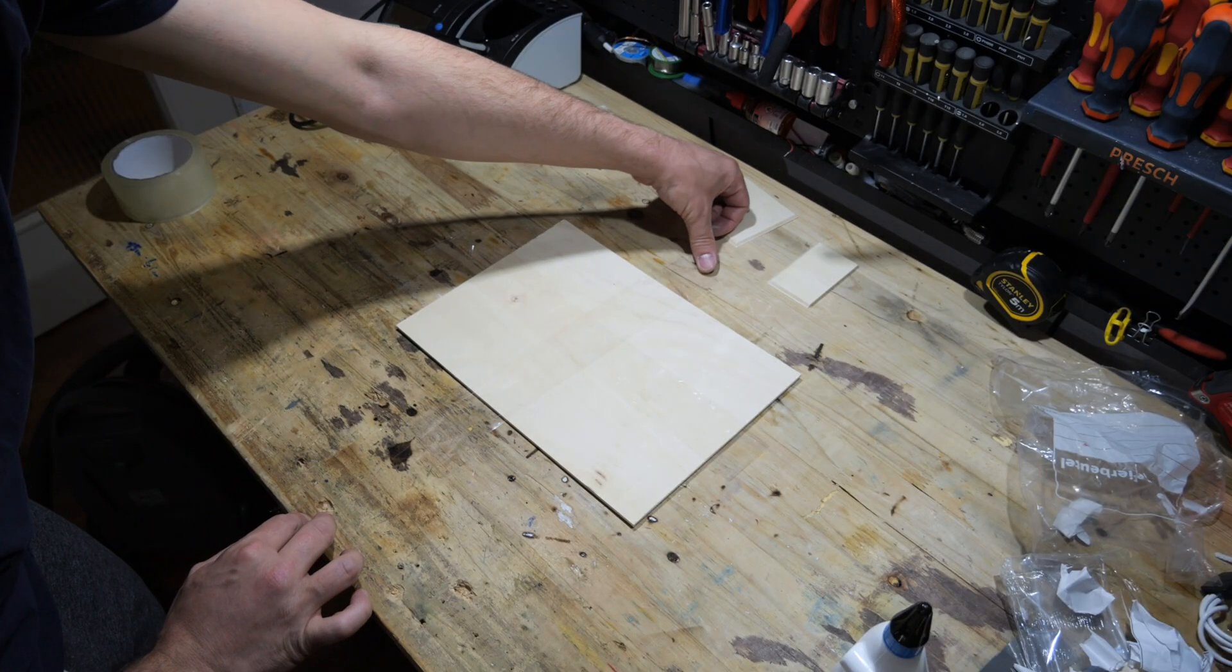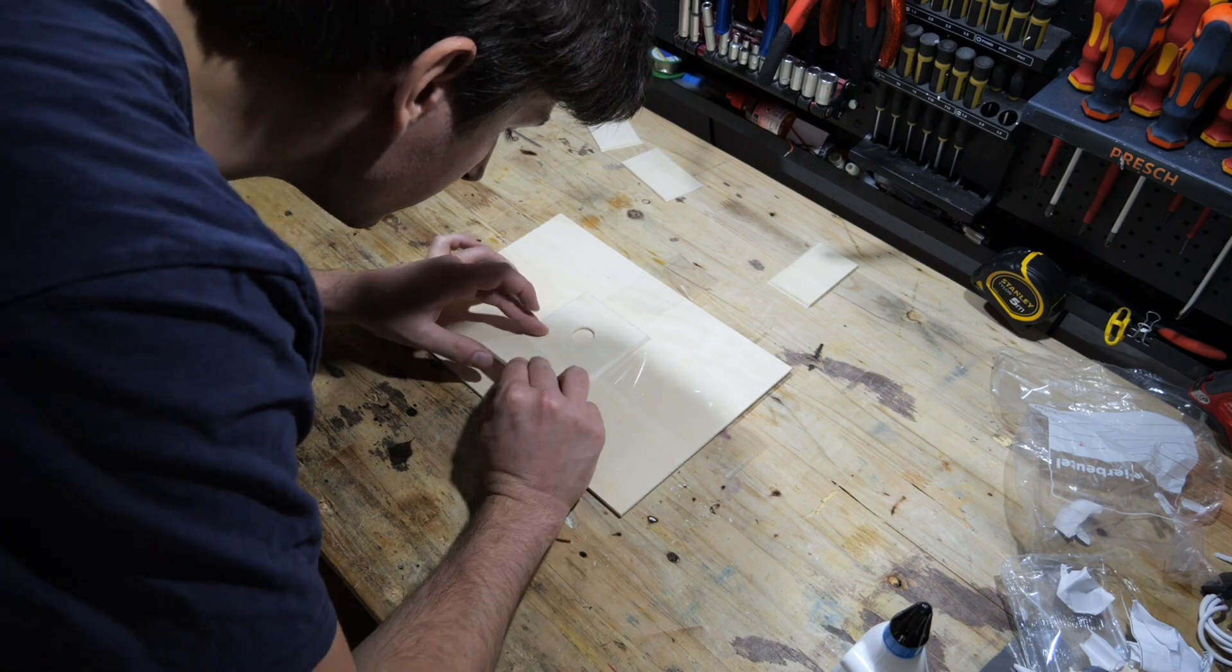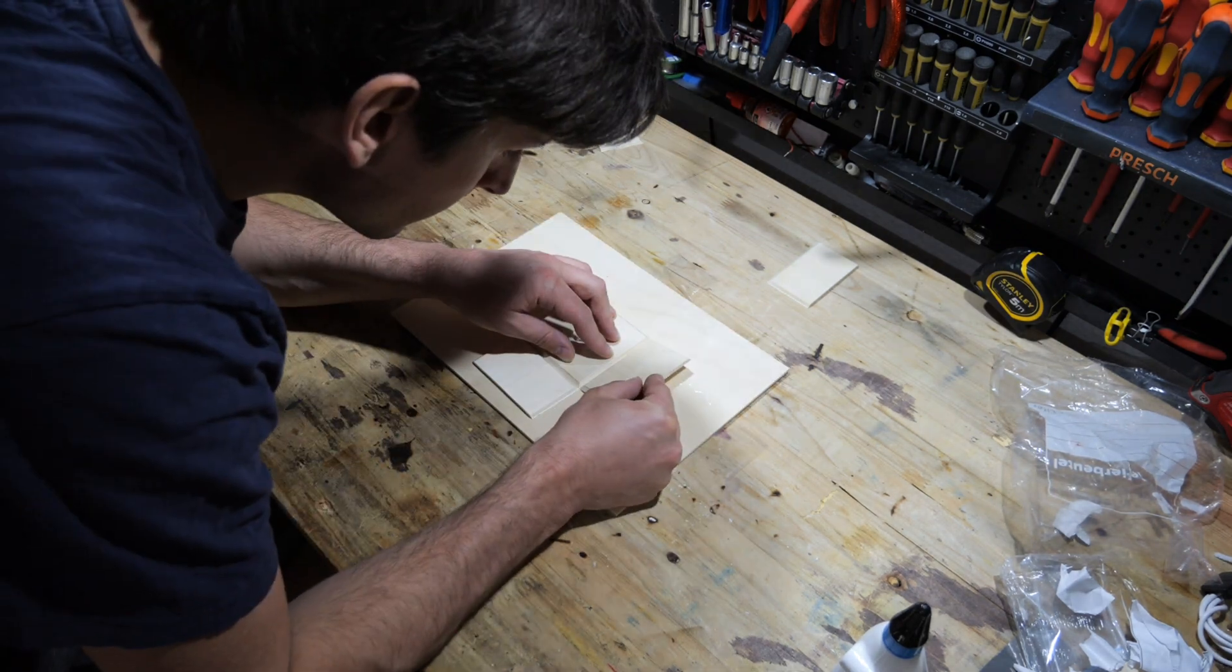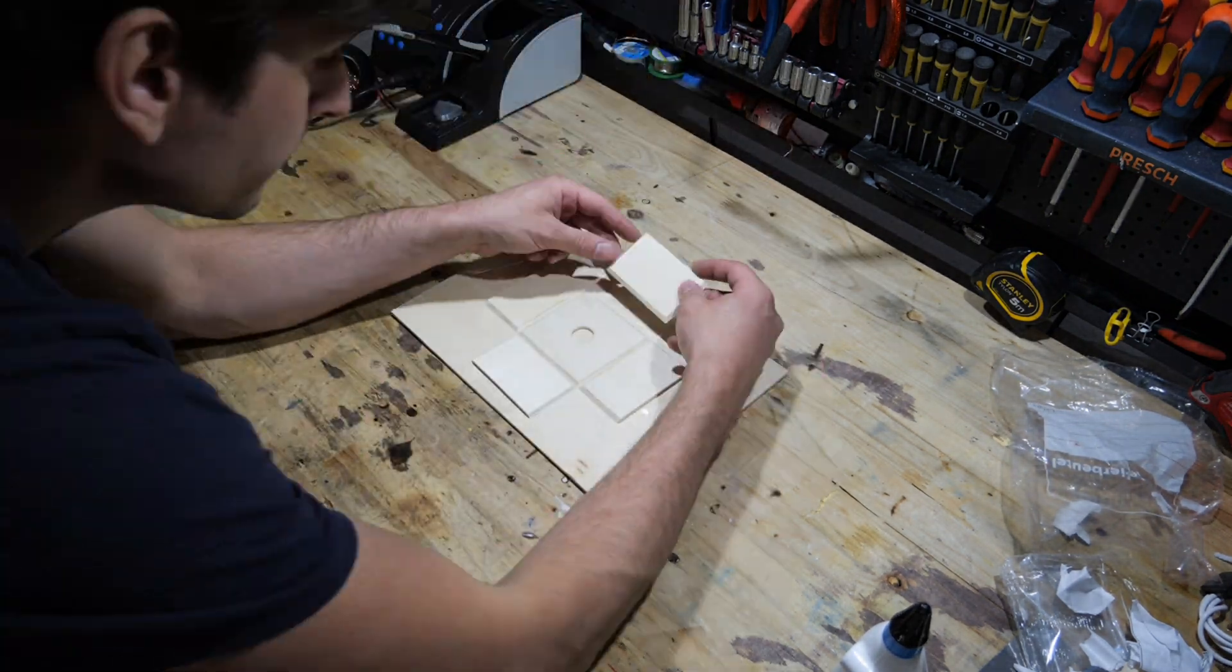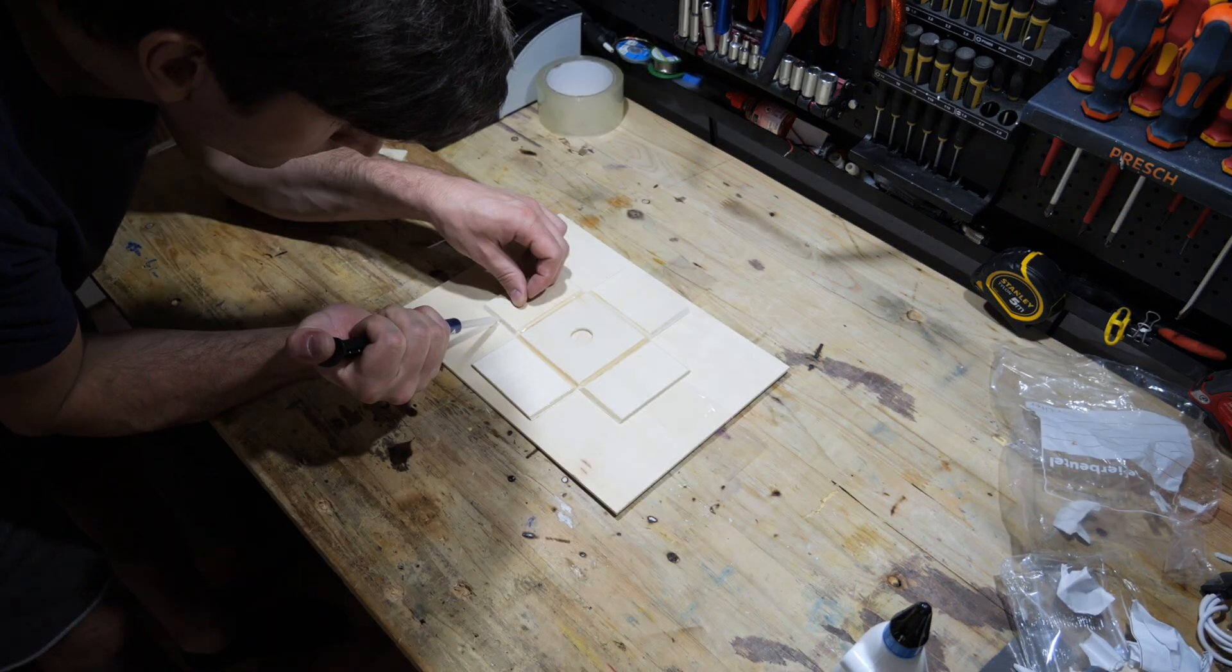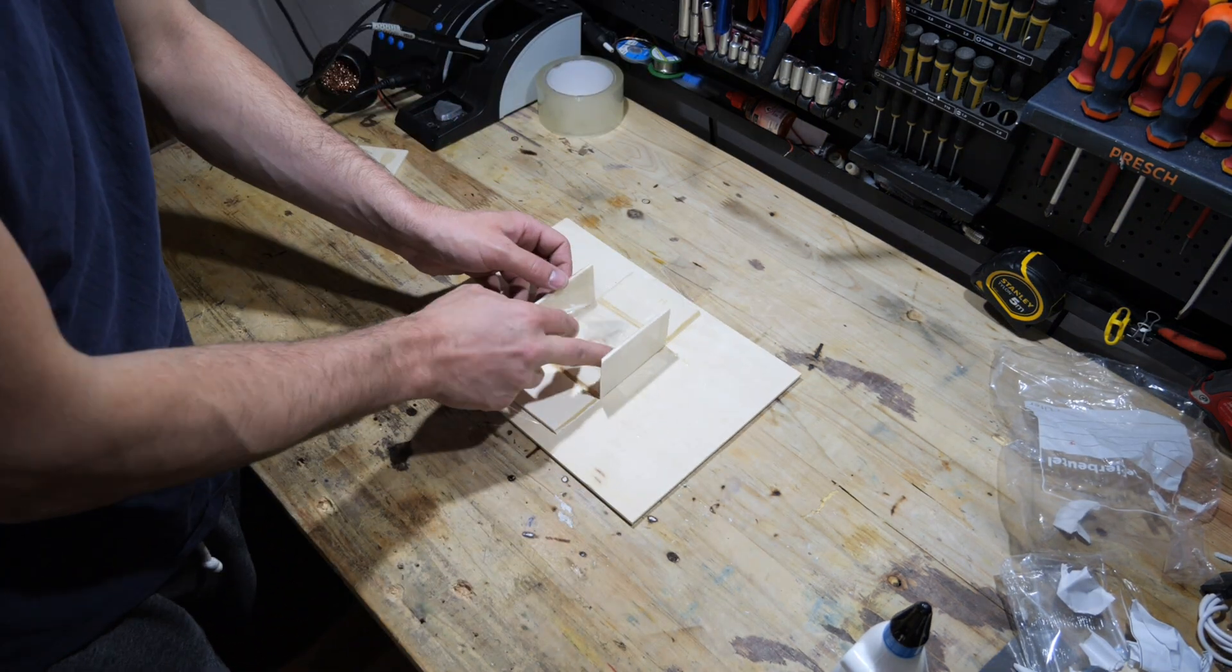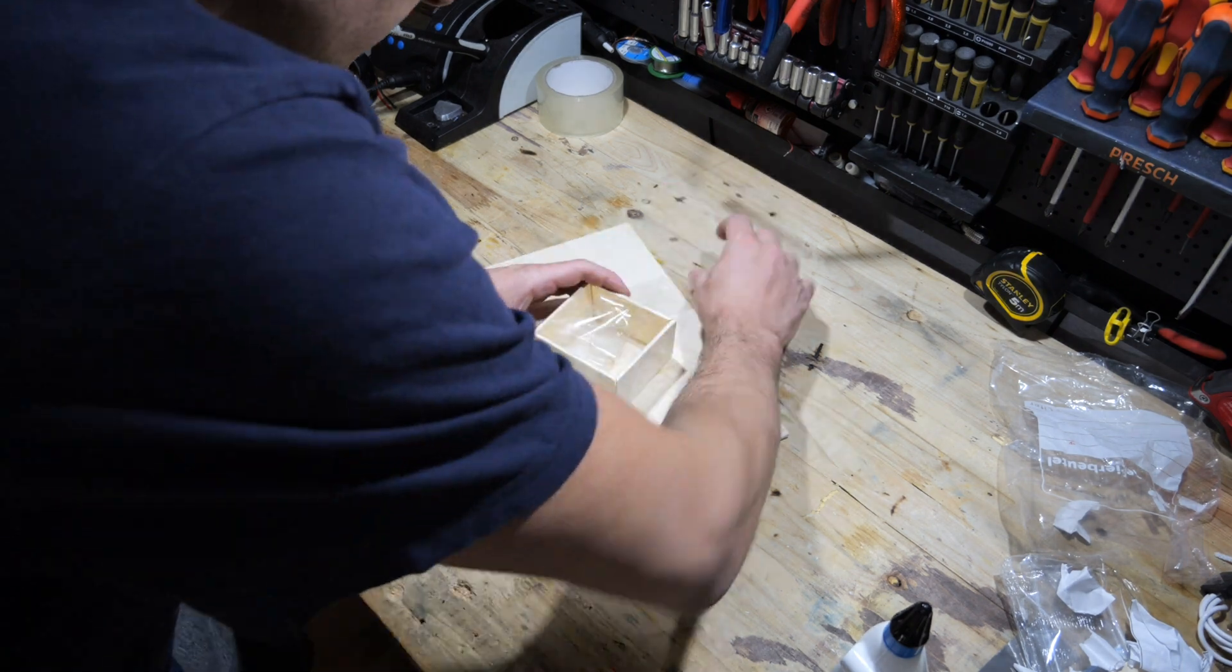To make a box out of it, I laid out two strips of adhesive tape and placed the individual pieces on them. Then I could simply fold the walls up and secure them with more tape.